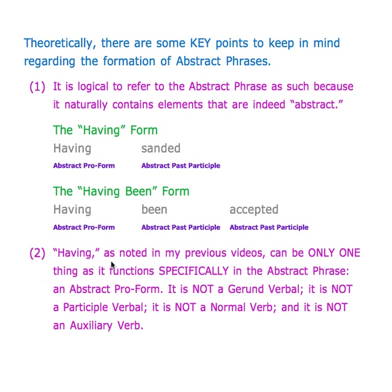Key point two: having, as it functions specifically in the abstract phrase, can be only one thing — an abstract pro form. It is not a gerund verbal, not a participle verbal, not a normal verb, and not an auxiliary verb. It can be only one thing.